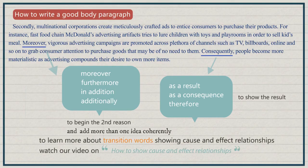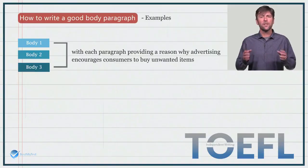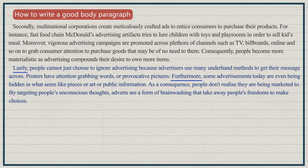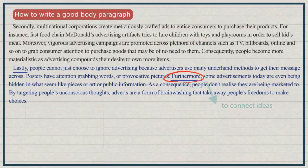You can learn more about transition words showing cause and effect relationships from our video 'How to Show Cause and Effect Relationships.' We've seen two body paragraphs. Let's look at the third and final body paragraph. 'Lastly, people cannot just choose to ignore advertising because advertisers use many underhand methods to get their message across. Posters have attention-grabbing words or provocative pictures. Furthermore, some advertisements today are even being hidden in what seem like pieces of art or public information. As a consequence, people don't realize they are being marketed to. By targeting people's unconscious thoughts, adverts are a form of brainwashing that take away people's freedom to make choices.' Just like the first and second body paragraphs, it starts with a transition word — 'lastly' — and also uses 'furthermore' to connect ideas, and 'as a consequence' to show the result.